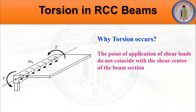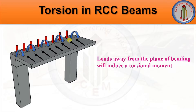Torsion forces develop in beams when the point of application of shear loads does not coincide with the shear center of the beam section - in that case the twisting force will develop in addition to bending moment. When the beam is transversely loaded and the resultant forces pass through the longitudinal shear center, there will be no twisting moment. If the resultant forces pass away from the shear center, the beam will experience twisting moment in addition to bending moment. For example, in a cantilever slab, loads away from the plane of bending induce a torsional moment in the beam.